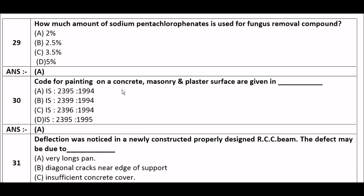Next question: How much amount of sodium pentachlorophenate is used for the removal of fungus? Option A: 2%, option B: 2.5%, option C: 3.5%, option D: 5%. The right answer is option A, 2%. A 2% amount of sodium pentachlorophenate is used for fungus removal.